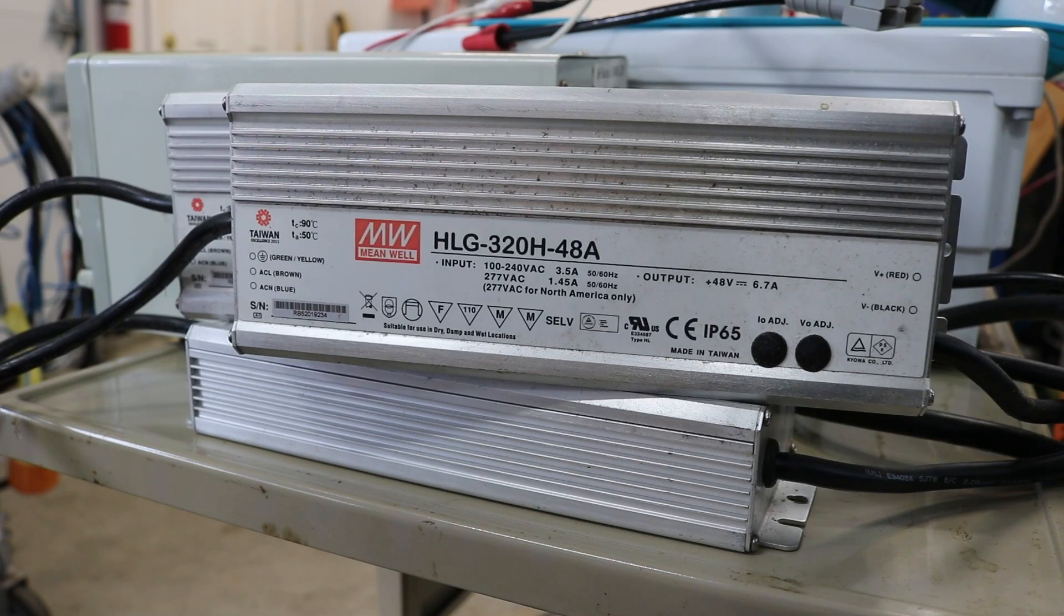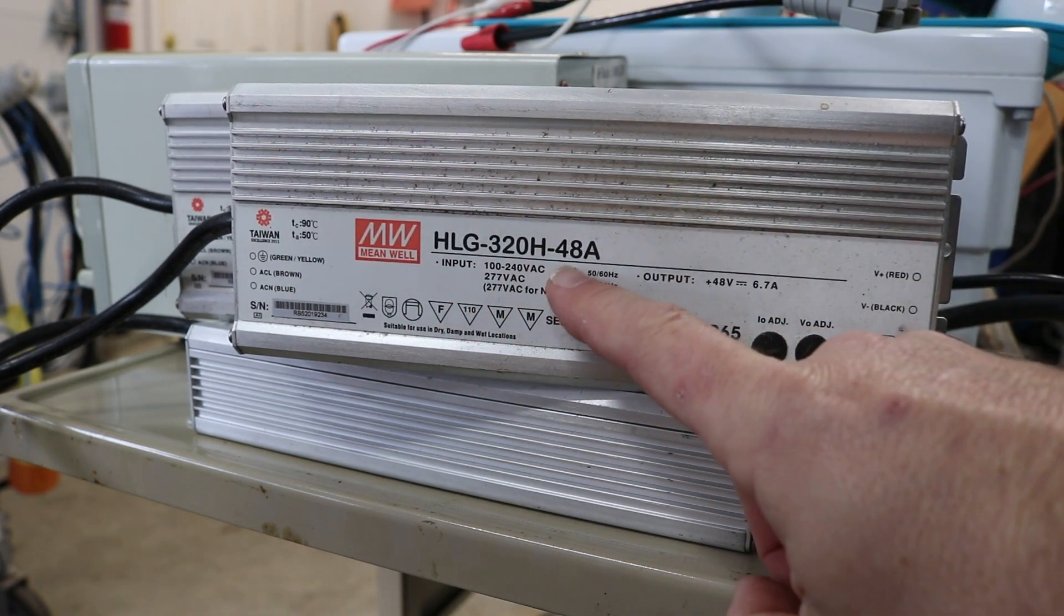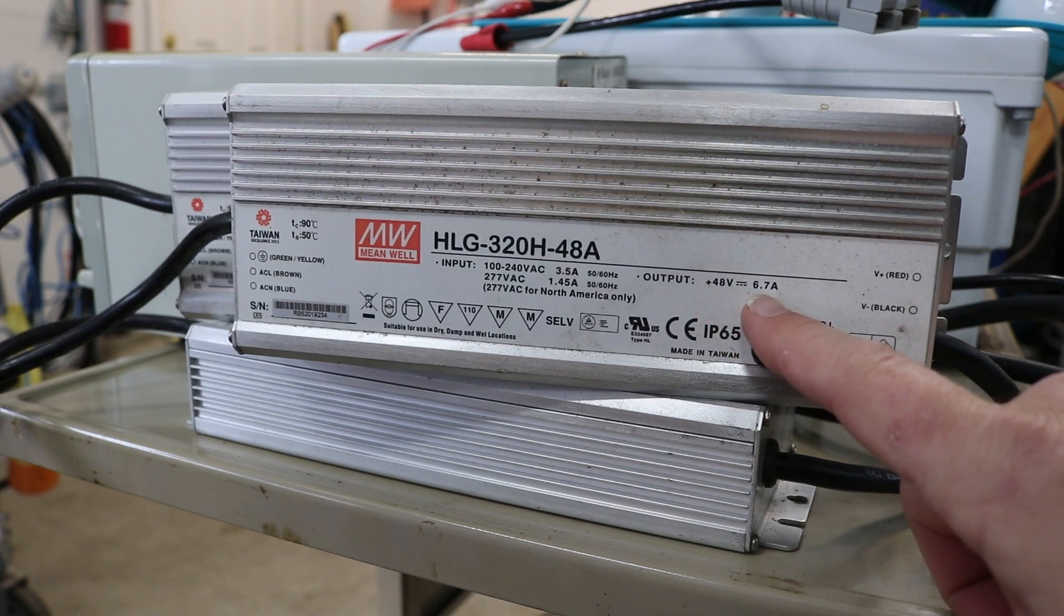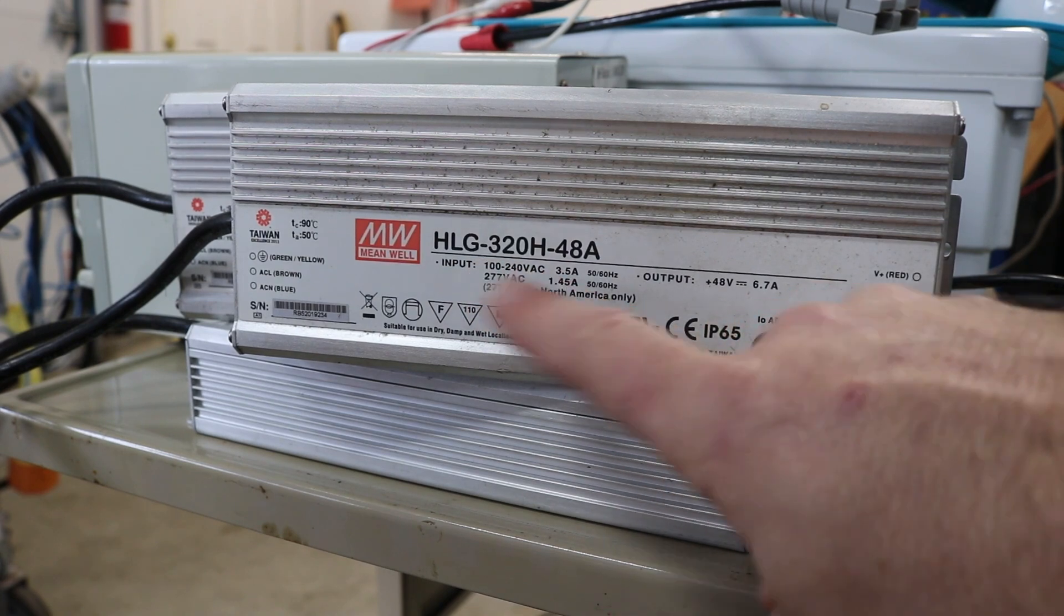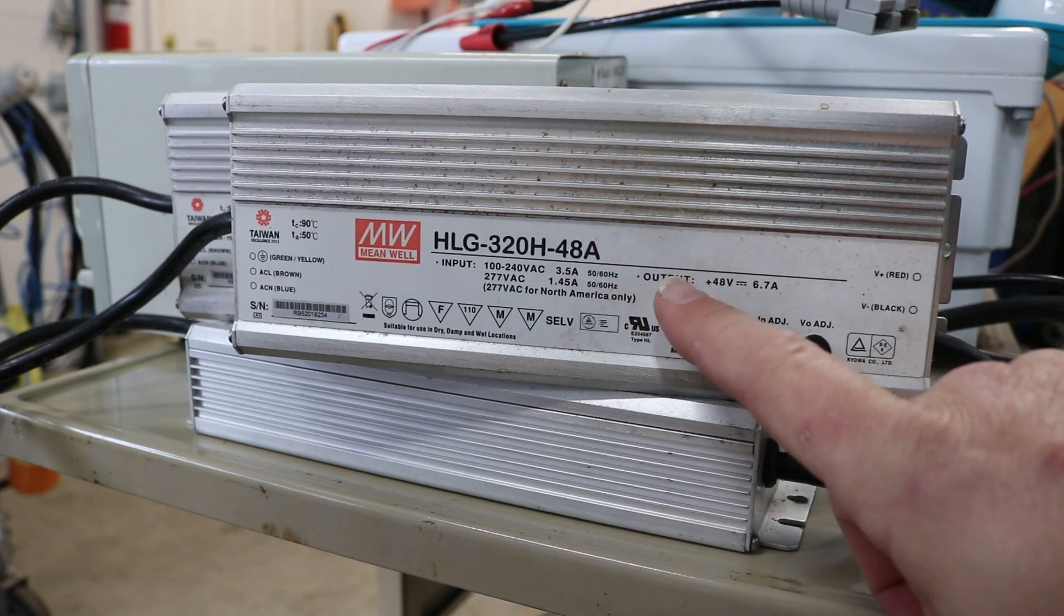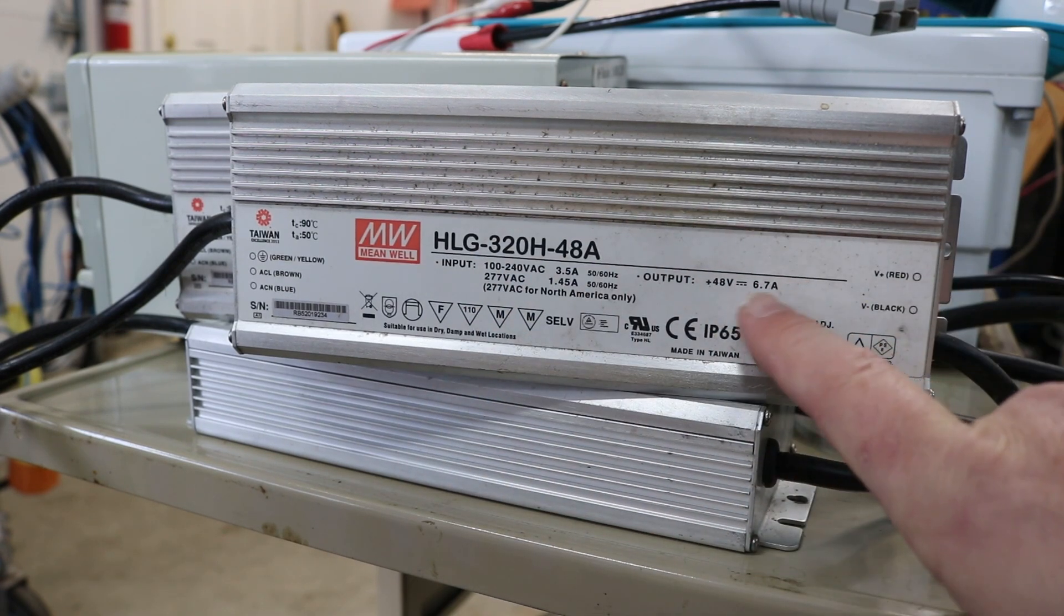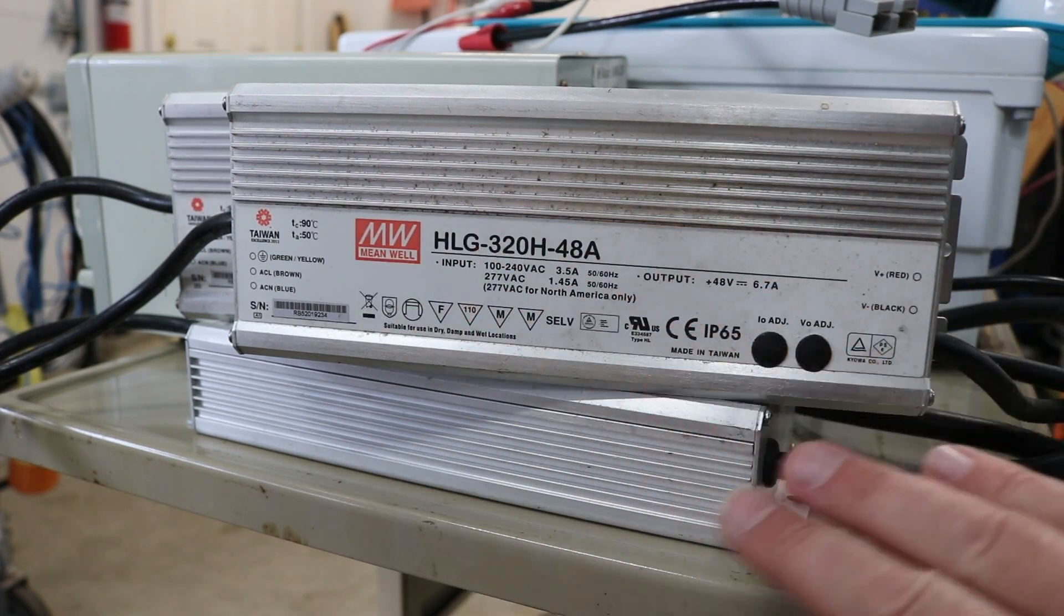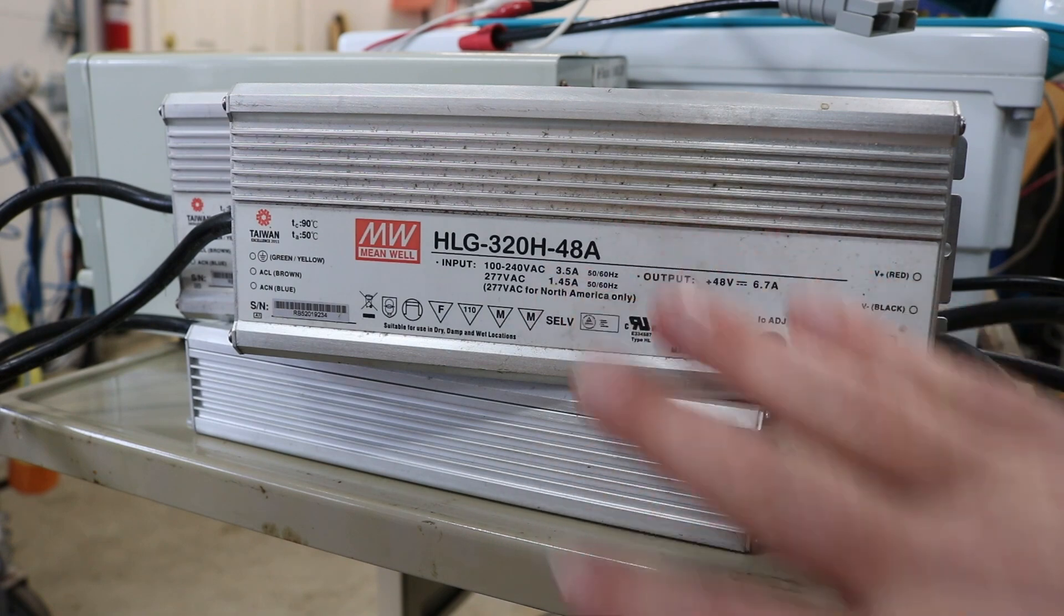So here I have a Meanwell power supply, or rather three of them. These are Meanwell HLG 320H 48A power supplies. Basically they output 48 volts nominal at up to 6.7 amps which makes about 320 watts or so. But since I have three of them connected here in series, it's going to increase that output voltage. So basically about 150 volts times three, but it's still going to be no more than that 6.7 amps. Now I would definitely not suggest doing this with any power supplies other than these. It was known that you can connect them together in series and they work just fine like that.